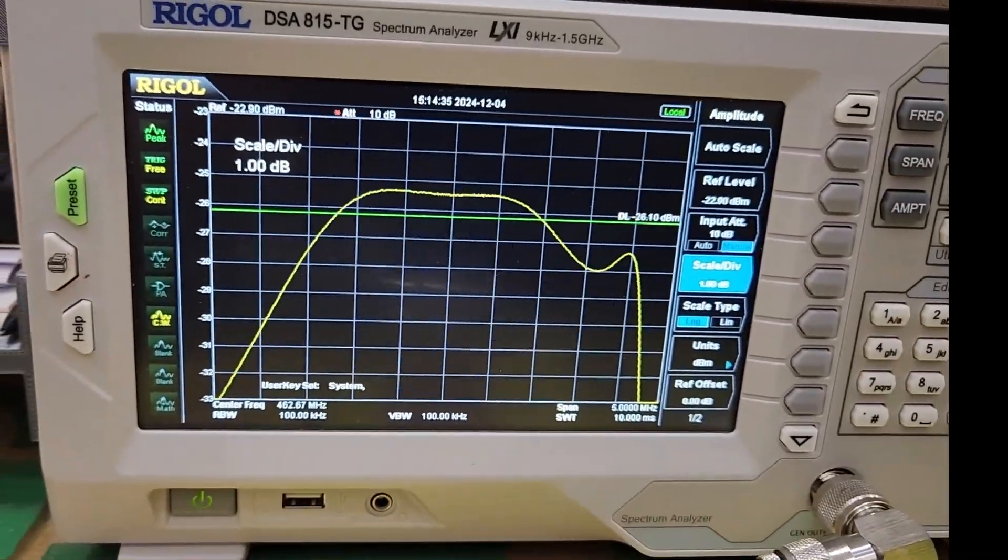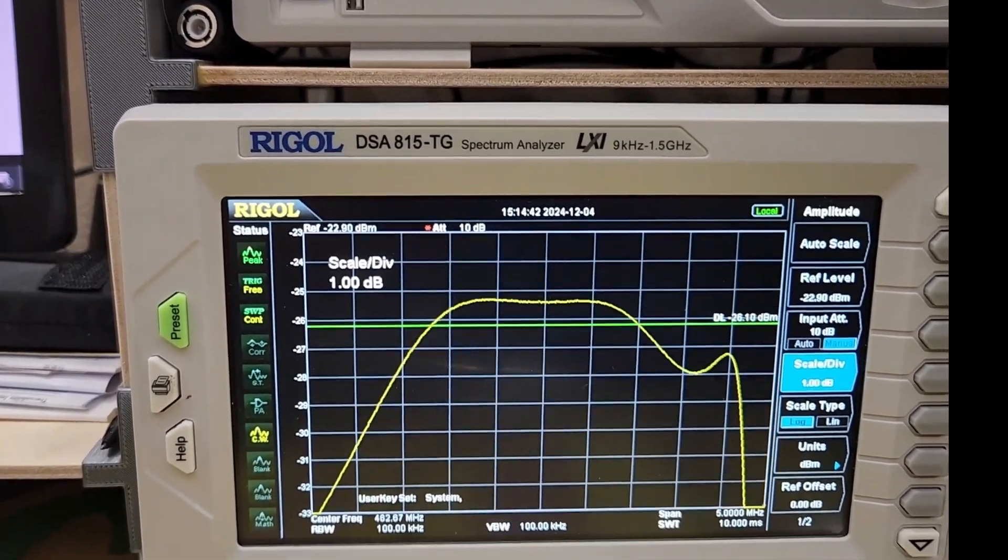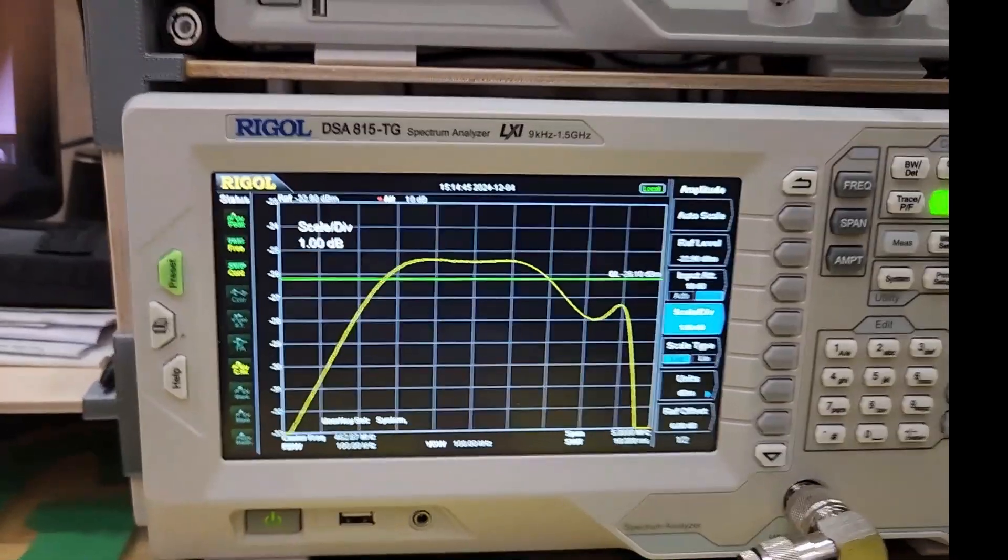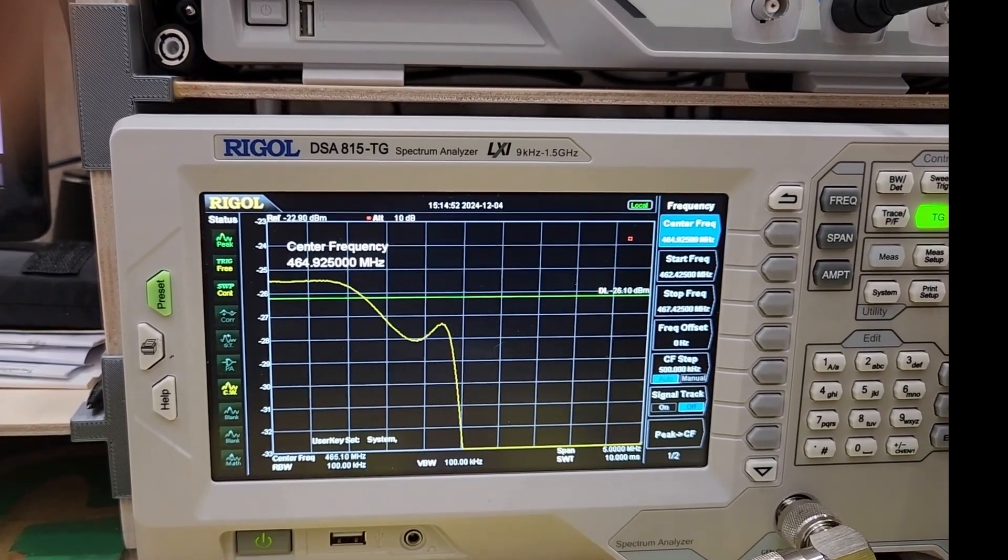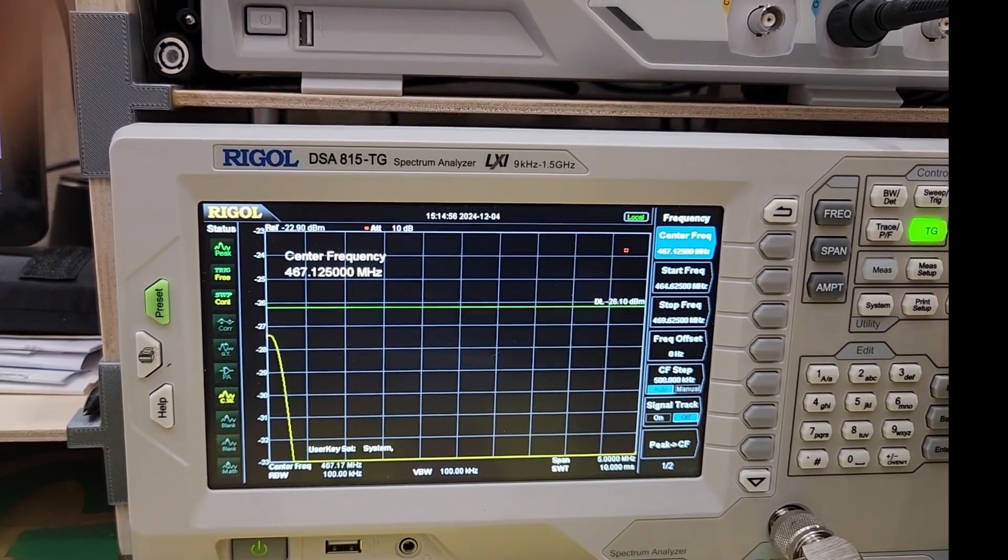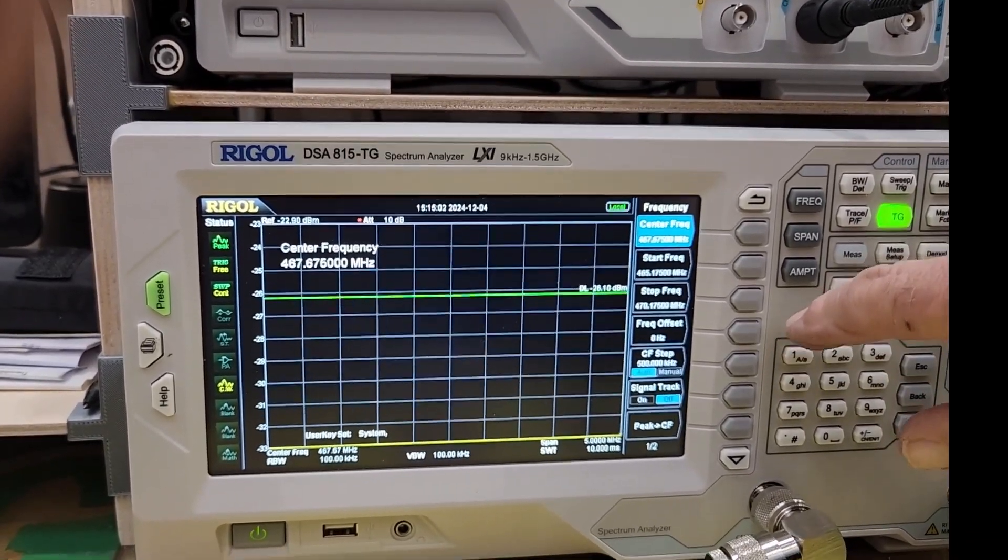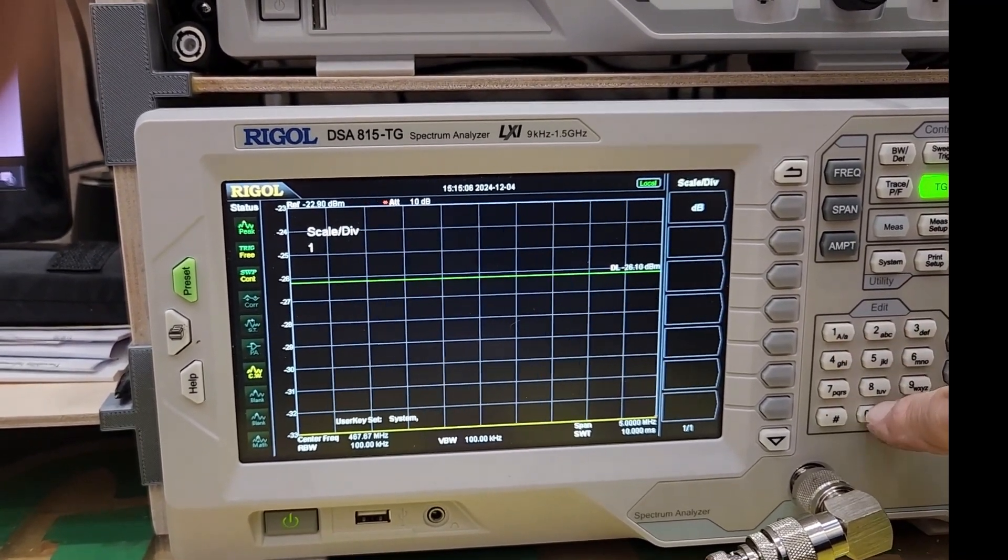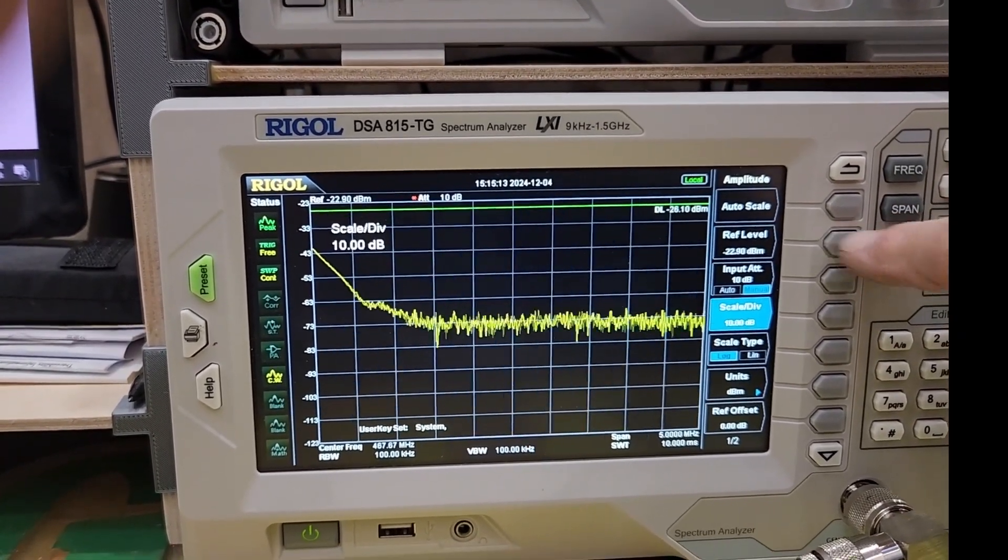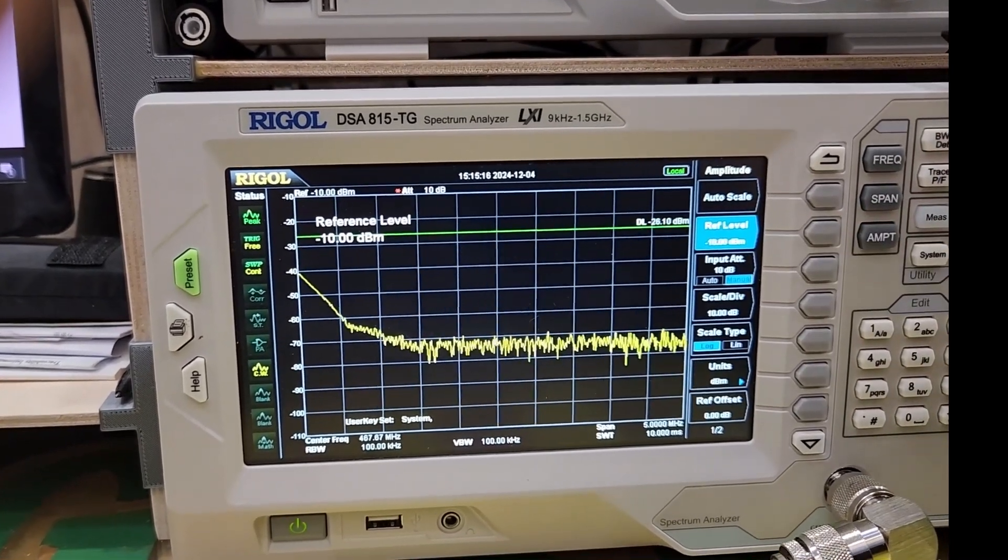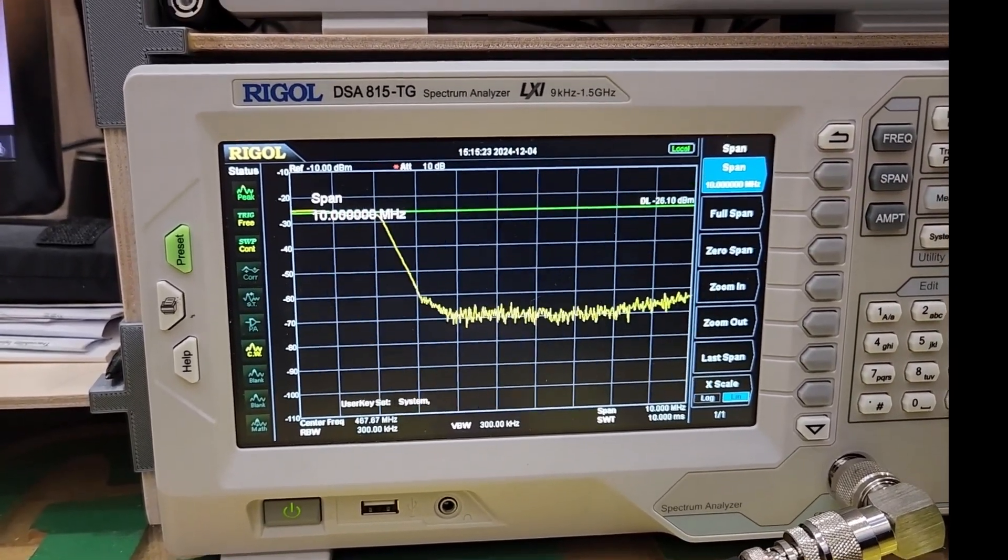We'll do the same on the low pass. Again, we have a little over 2 dB of insertion loss there, 2.2 to 2.5 dB, which is fine. And we'll look at the reject here. I've got to go to 467.675. Let me reconfigure some of this here. Let's go ahead and spread it out a little bit. And there we go.